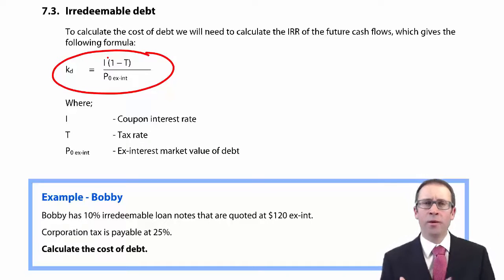It's great, isn't it? You've got a formula, plug the numbers in and you get the answer on your calculator. The cost of debt is equal to the interest multiplied by one less the tax charge divided by the price ex-interest.